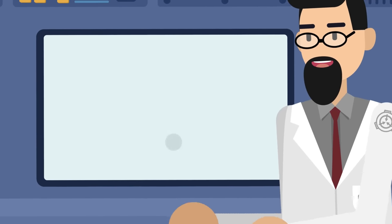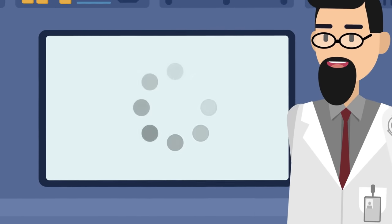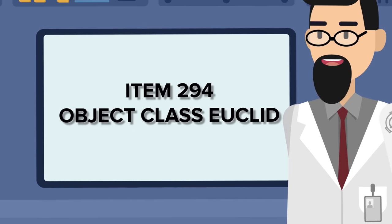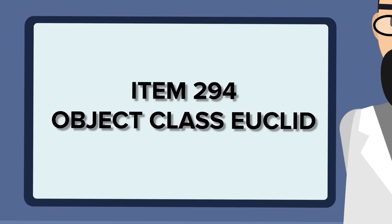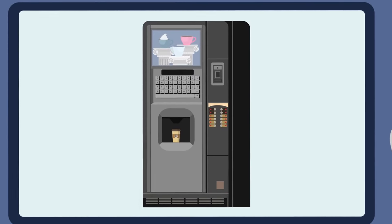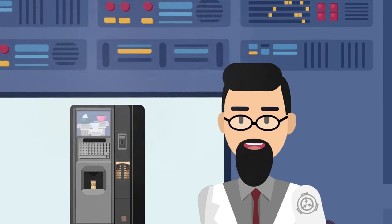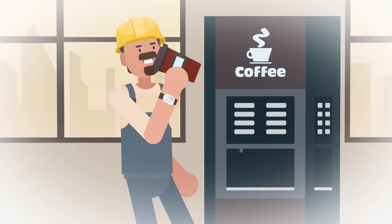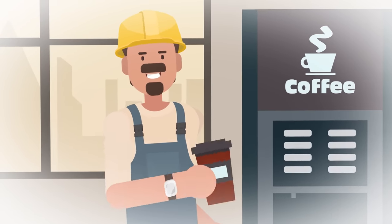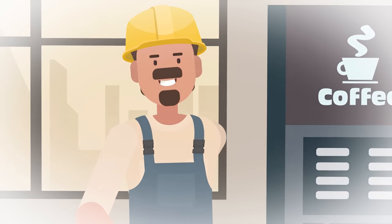The first thing you see when you open the SCP-294 file is its number, of course. Item 294, Object Class Euclid. The next thing you see is the image. If you were imagining a tiny little coffee maker before, this should get rid of that. SCP-294 is big, the kind of coffee machine you'd see in a factory break room.